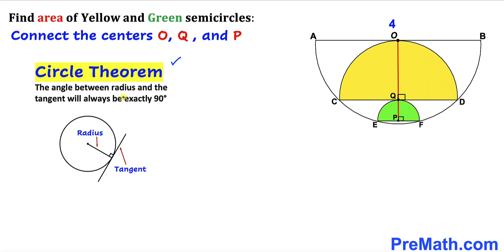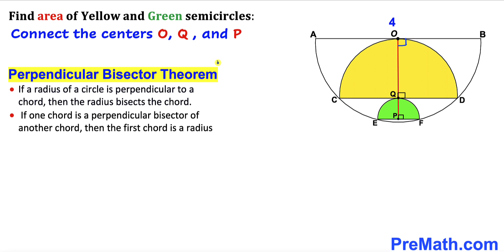According to this theorem, the angle between the radius and the tangent line will always be 90 degrees, as you can see in this diagram. So therefore all these angles are going to be 90 degrees, because this red line represents the radius and these are our tangent lines. Furthermore, let's recall the perpendicular bisector theorem: if the radius of a circle is perpendicular to a chord, then the radius bisects the chord. So therefore these line segments are equal in pairs, and the centers O, Q, and P lie on the very same line.